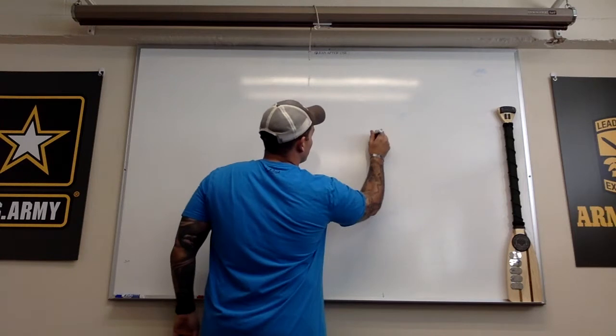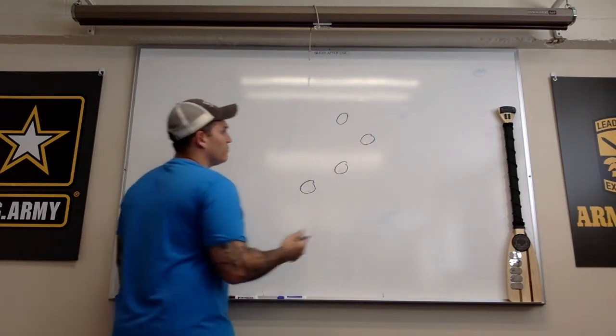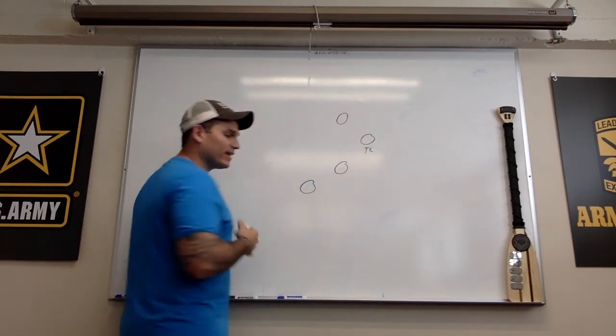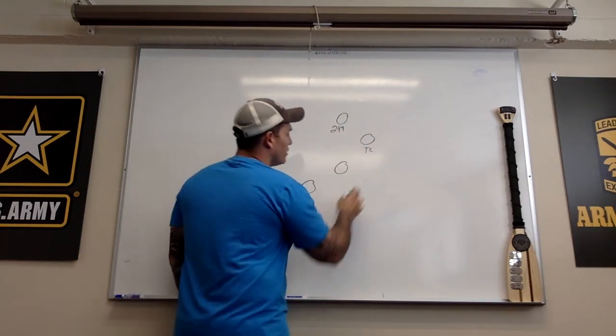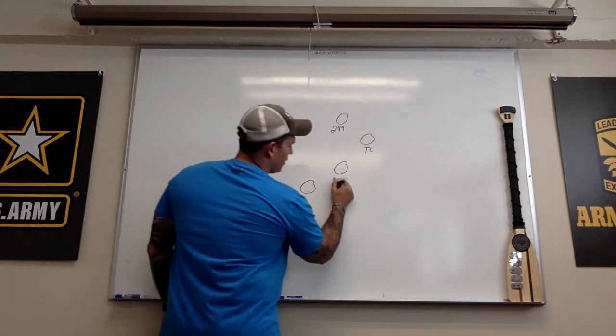First we're going to start with the fire team. Most of the time we move in a fire team wedge. The team leader is always the number one guy. When you talk about key weapon systems placement, the 249 always goes next to the team leader, either the left or the right, but it goes opposite of your grenadier and your extra rifleman.